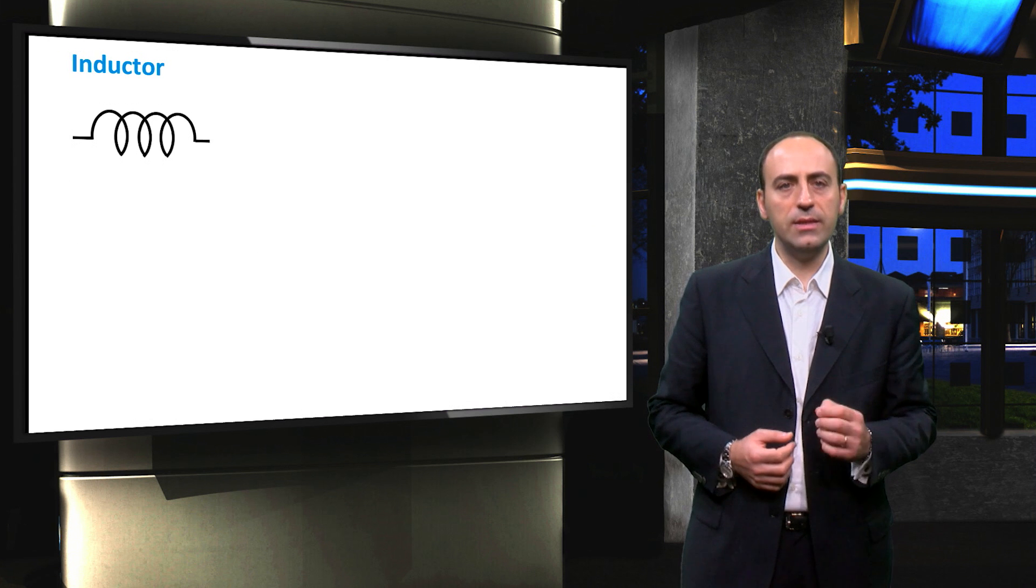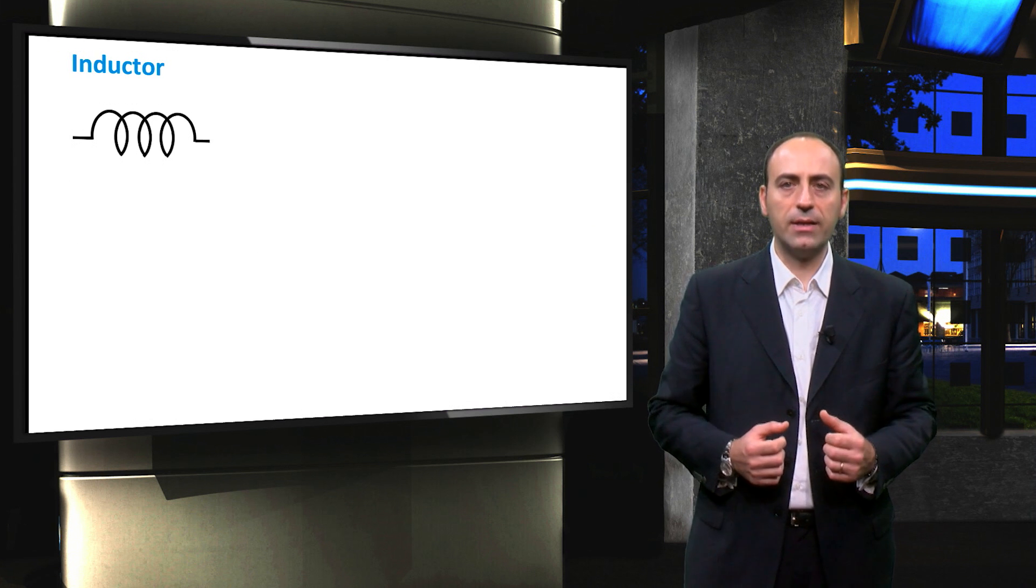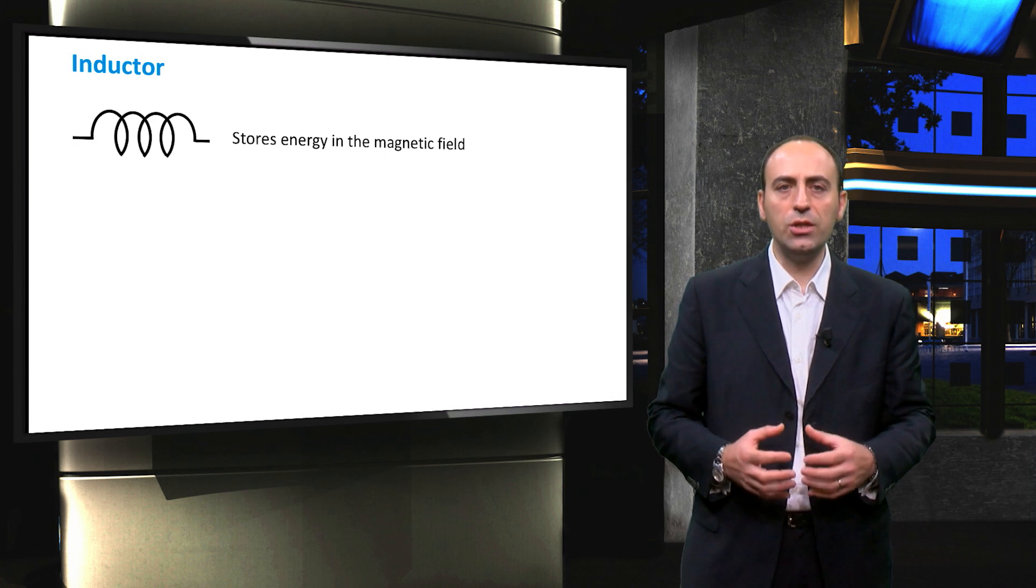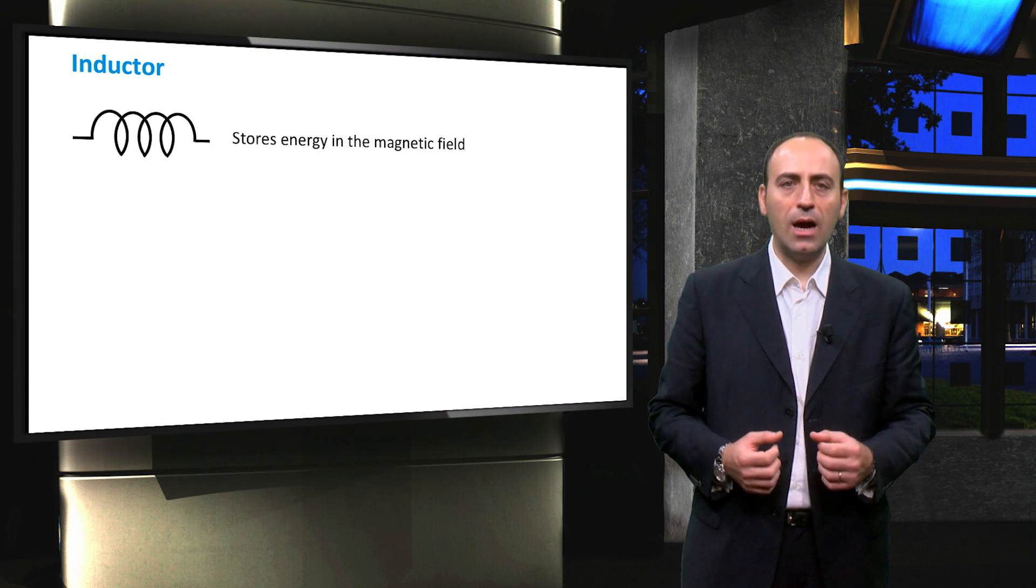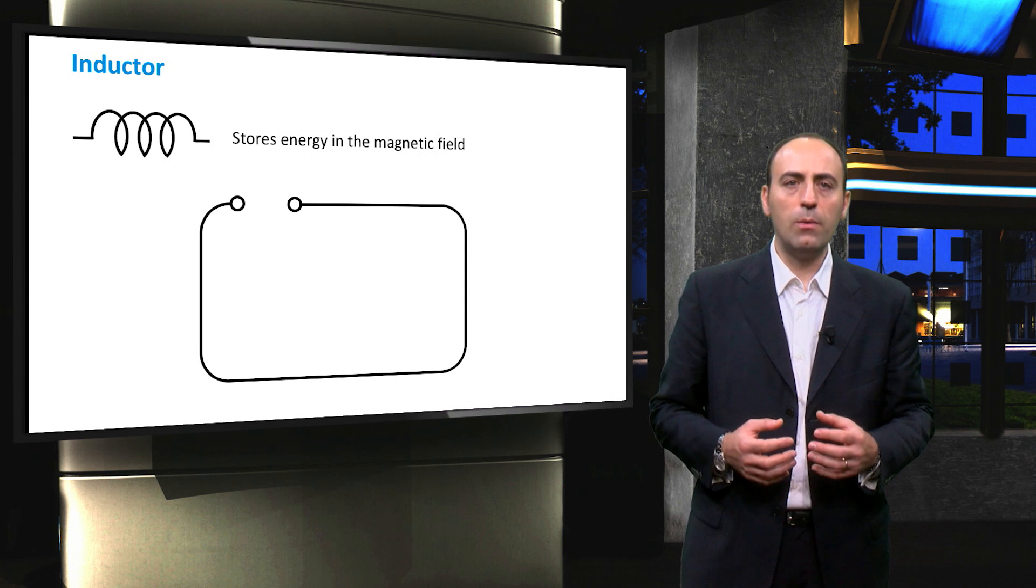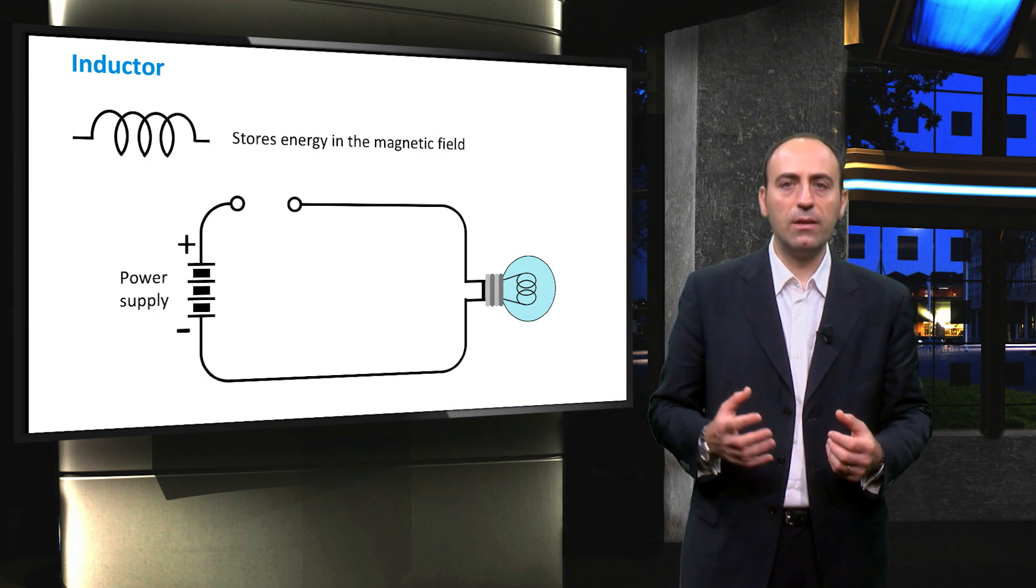The next component is the inductor. Simply speaking, the inductor is a lumped electromagnet that serves to store energy in the form of a magnetic field. To understand how an inductor works in a circuit, we will use the following example. Here we will have a battery or a power supply, a light bulb and a switch.